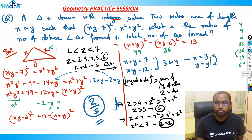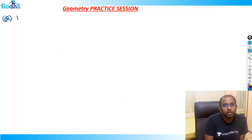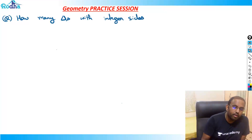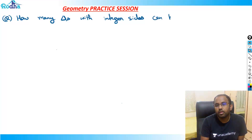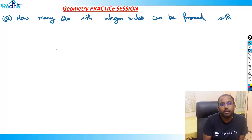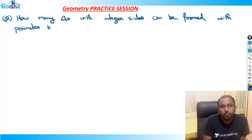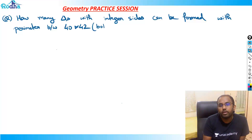This question says: how many triangles with integer sides can be formed with a perimeter between 40 and 42, where both values are inclusive? Just to revise the main concept here.